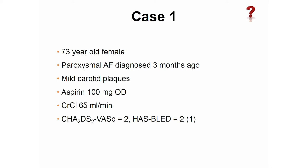My first question is: who would initiate oral anticoagulation for this patient now? Some hands go up. What do you do with aspirin? We stop aspirin, of course. That brings down her HAS-BLED score to 1. Obviously she has no indication for aspirin anyway. If we stop that medication, her HAS-BLED score comes down because there's no co-medication.